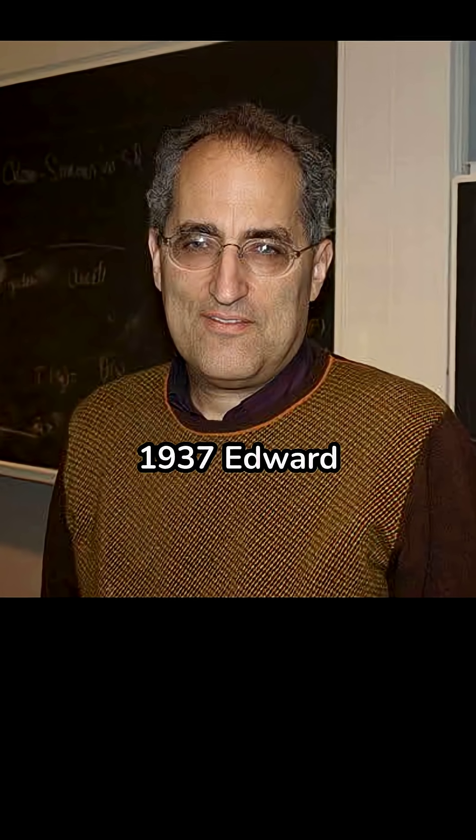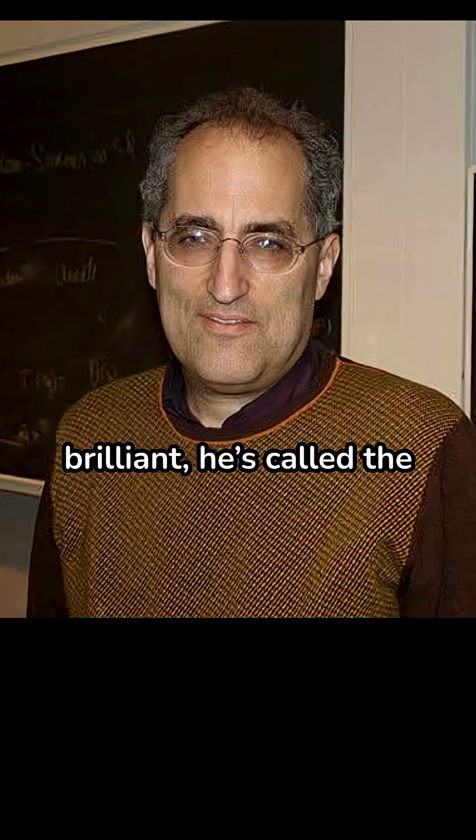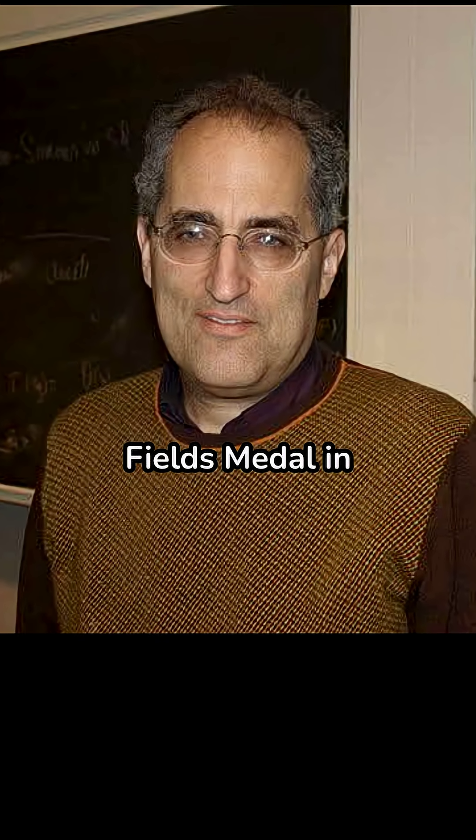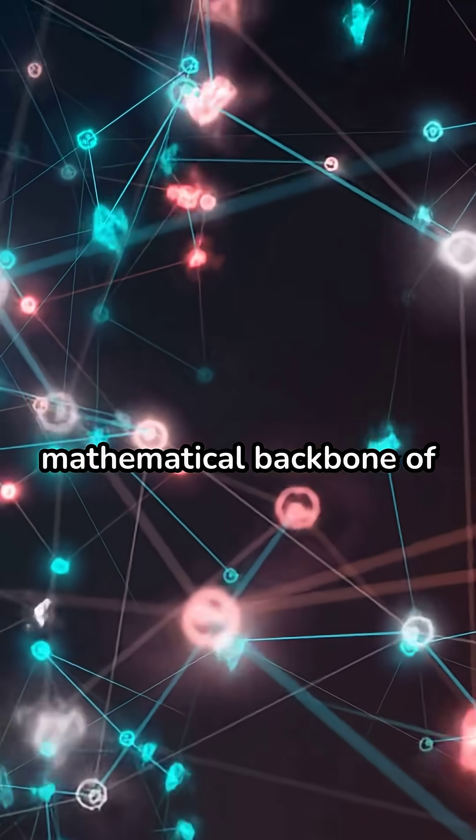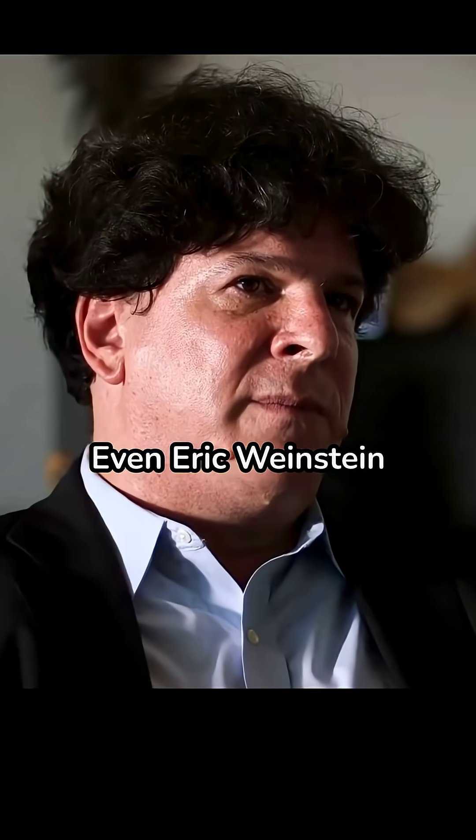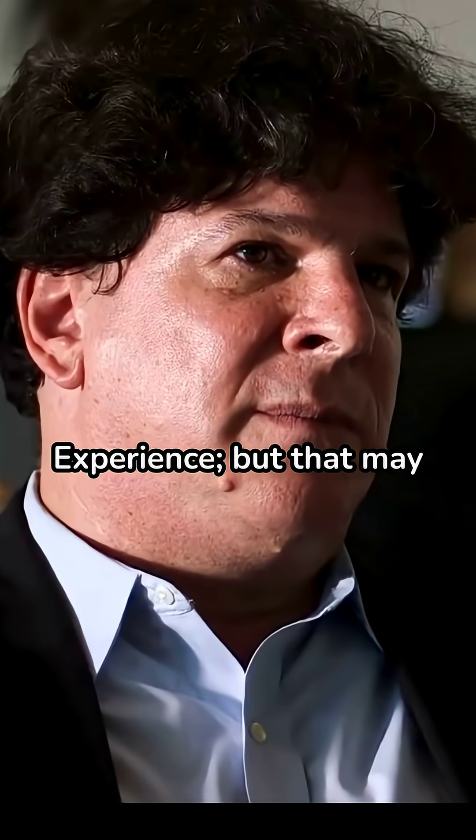August 2nd, 1937, Edward Witten was born, who became a physicist so brilliant he's called the Einstein of modern string theory. The only physicist to win a Fields Medal in math, he built the mathematical backbone of M-theory, the leading candidate for a theory of everything. Even Eric Weinstein publicly called for a debate with Witten on the Joe Rogan experience, but that may not happen.